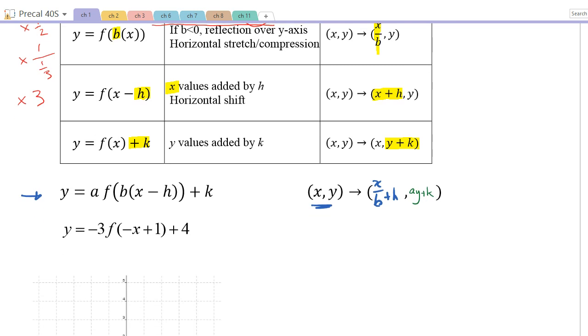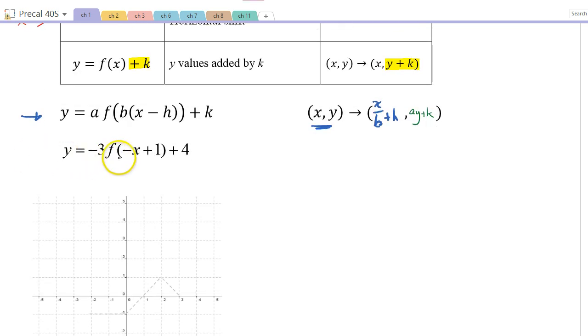All right, so now let's use that all-in-one mapping notation method here. To graph this, y is equal to -3f(-x + 1) + 4. So it's the same one we looked at on the previous page. We still have to do that same step to factor out this b value. So we're going to write y is equal to -3f(-x - 1). Okay, so let's think about what our values are here. My a value is going to be equal to -3. My b value is going to be equal to -1. My h, it's the opposite of that, so it's going to be equal to 1. And my k value is 4.